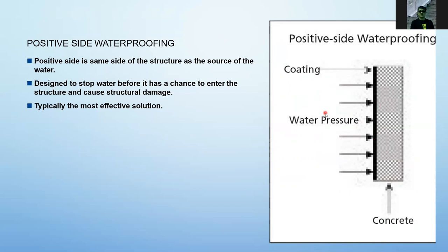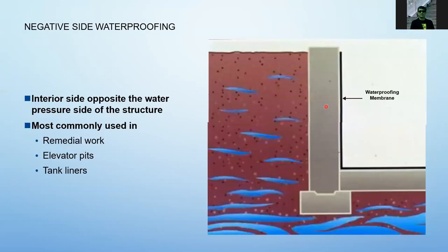Positive side waterproofing can be applied at lower or upper ground level. It is designed to stop water before it has a chance to enter the structure and cause structural damage — it prevents water from penetrating the concrete and is the most effective solution. The negative side waterproofing is on the interior part of the house or basement — the interior side opposite the water pressure side of the structure.